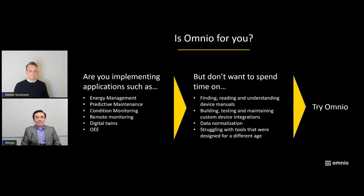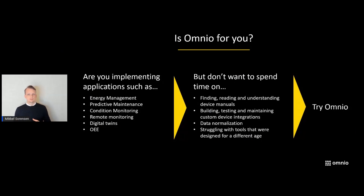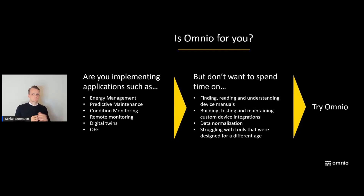It will be great to see Omnio Edge in action. But before that, can you give us an idea of some of the use cases? Omnio Edge is a horizontal infrastructure layer that can be used across many different use cases. Some of the popular ones are energy management, predictive maintenance, condition monitoring, and digital twins. If you want to build and scale solutions like that but don't want to spend time on time-consuming integration and data mapping, you should definitely try Omnio Edge.